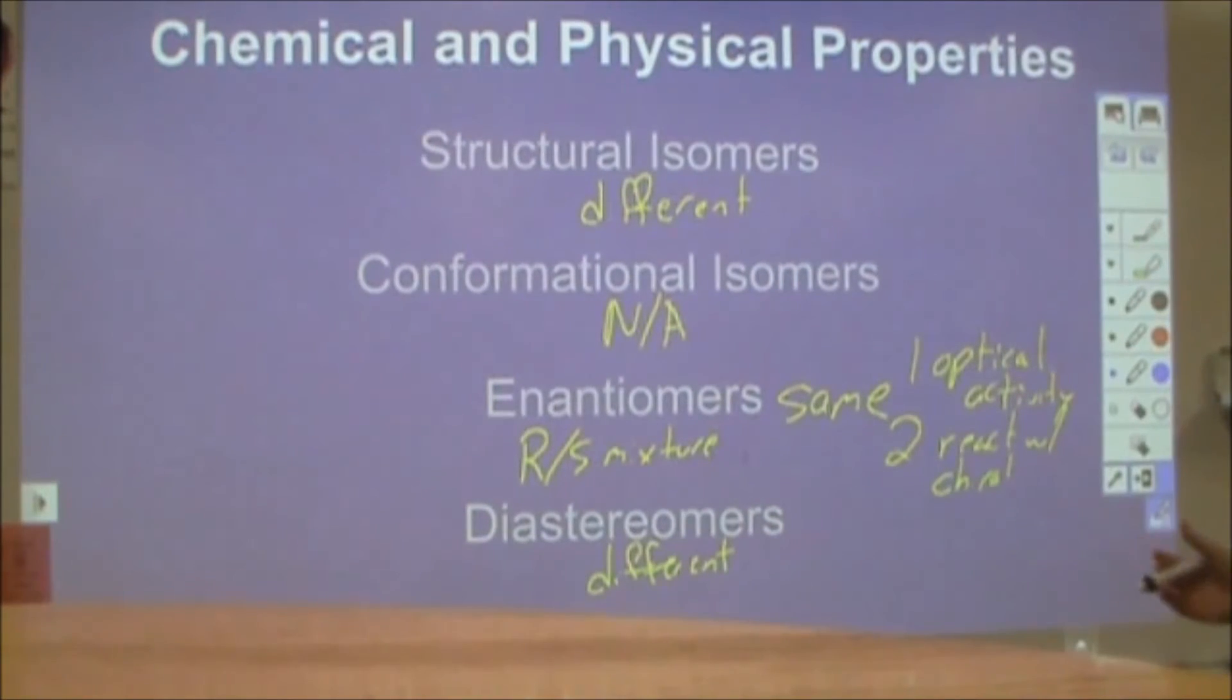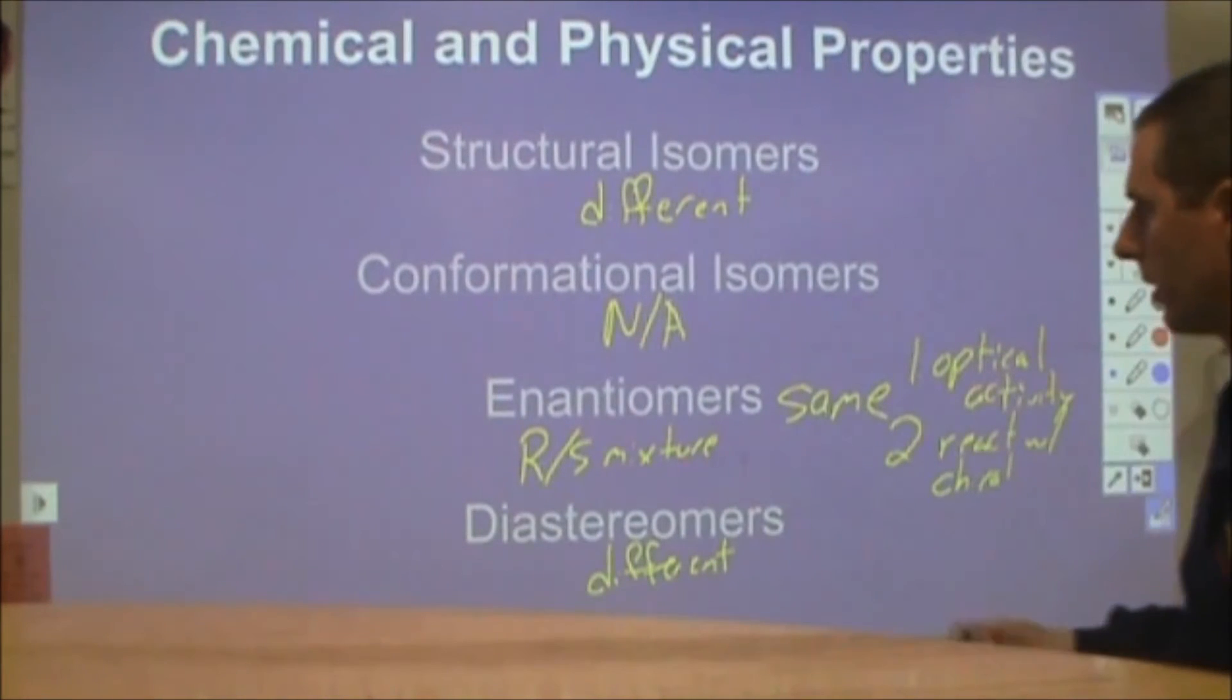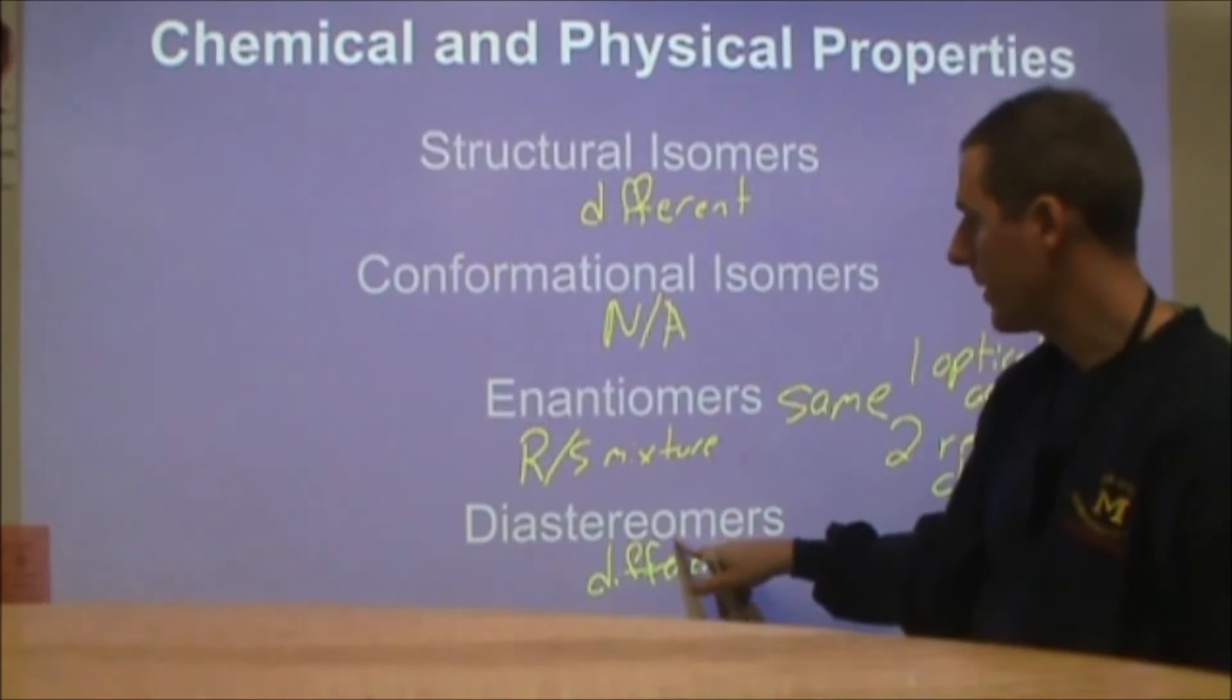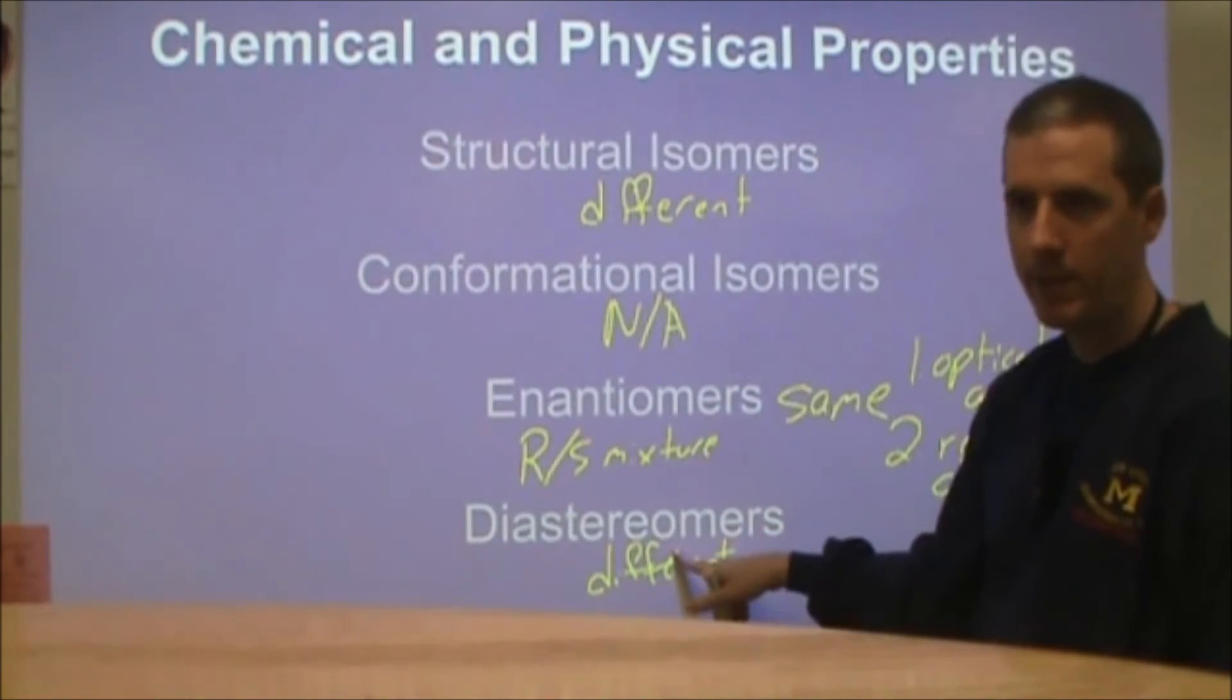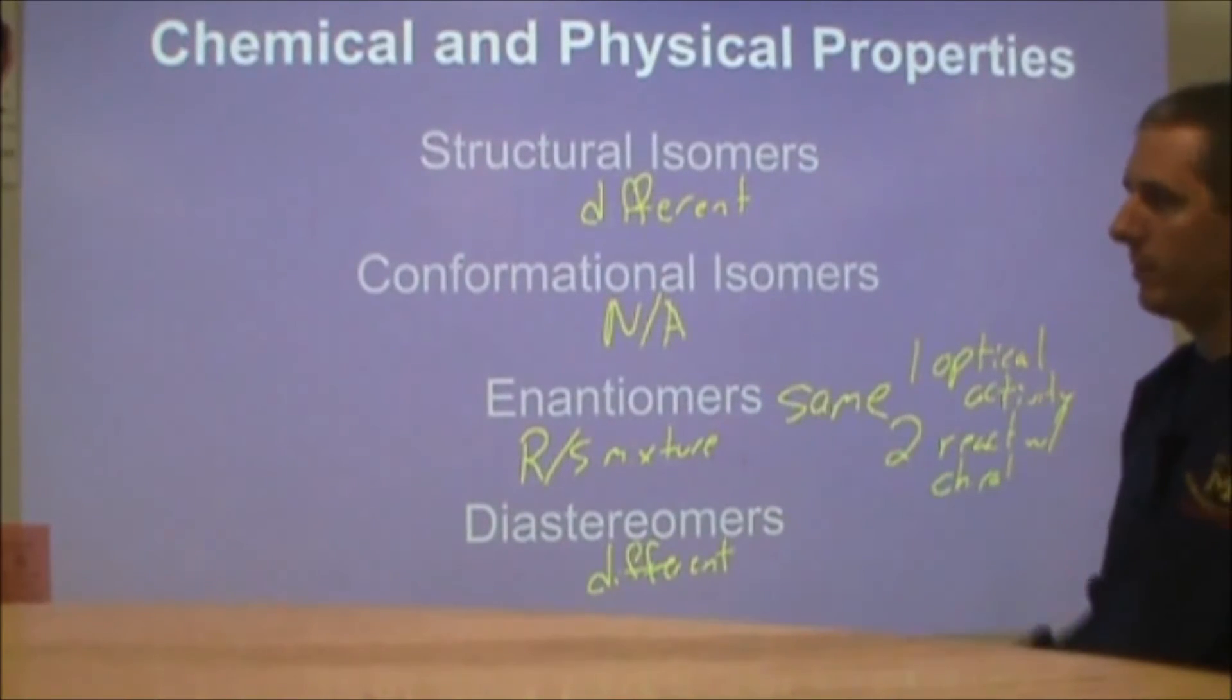So the different arrangements in space and not being mirror images of each other allow these to have different boiling points, melting points, and chemical reactivity. So you could convert an enantiomer into a diastereomer, separate the diastereomers, and then reconvert it back to the enantiomer. And that would allow you to separate your mixture.